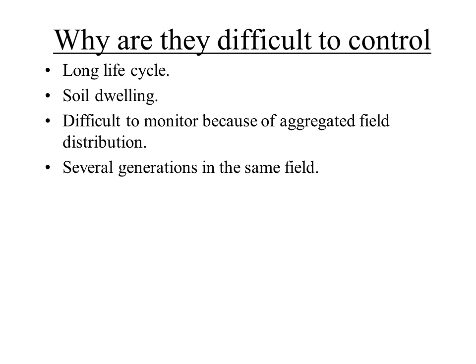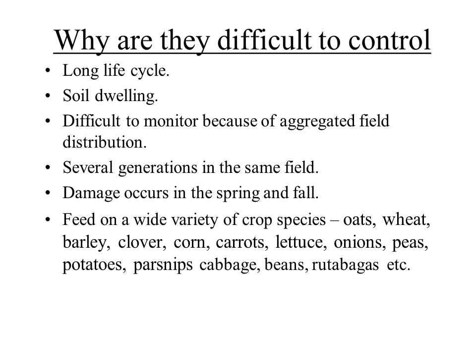There are several generations in the same field — every year beetles fly in and lay eggs, so you could have one, two, three, and four-year-old larvae in your field at the same time. The damage occurs in both spring and fall. Unlike other insects that come in, do damage, and then you can spray and control them, wireworms do damage twice. In spring they feed on spring crops; if you plant a fall-harvested crop like rutabagas, potatoes, or carrots, they're damaging that too. They also feed on a really wide variety of plants, which makes them so difficult to control.